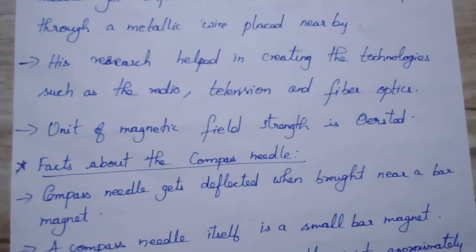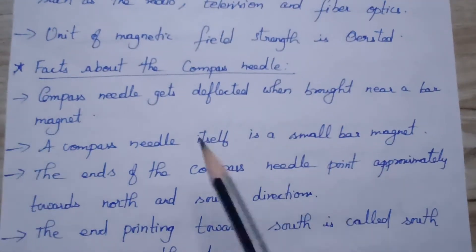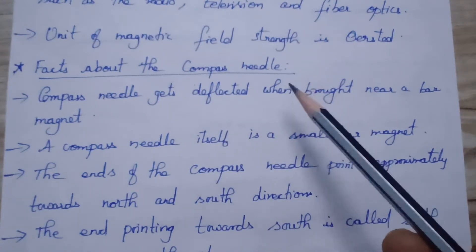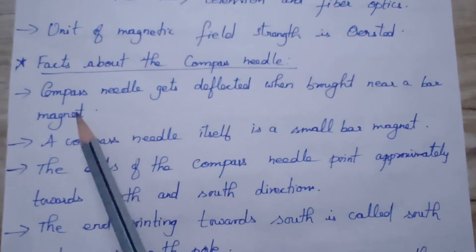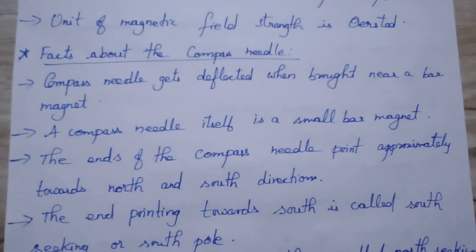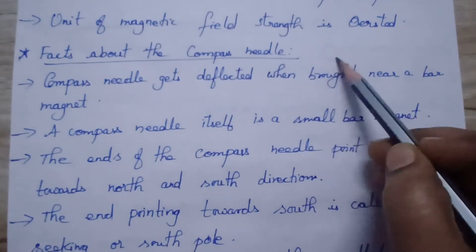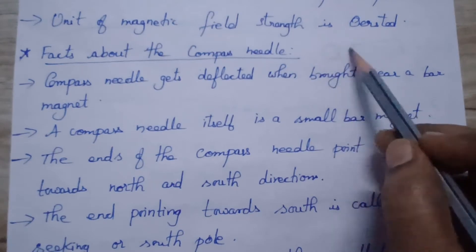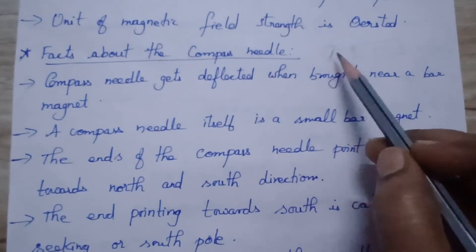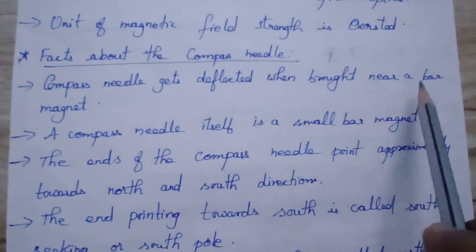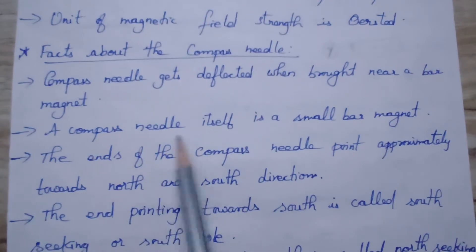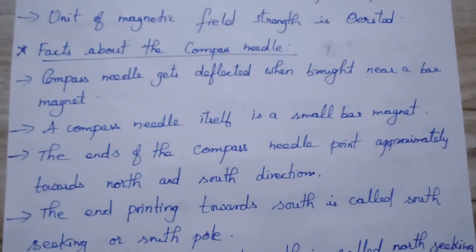We will see some facts about the compass needle. He found that the compass needle is deflected when a current-carrying metallic wire is placed near it. Compass needle gets deflected when brought near a bar magnet. A compass needle itself is a small bar magnet — the needle itself is considered to be made up of a magnet.